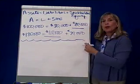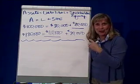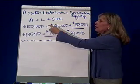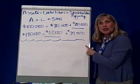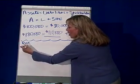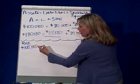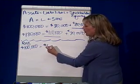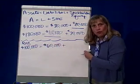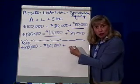What if we look at the balance sheet — which is the accounting equation. More on that later. But what if the accounting equation at the beginning of the year showed assets of $100,000 and liabilities were $60,000? What was stockholders' equity at the beginning of the year? Did you say $40,000?